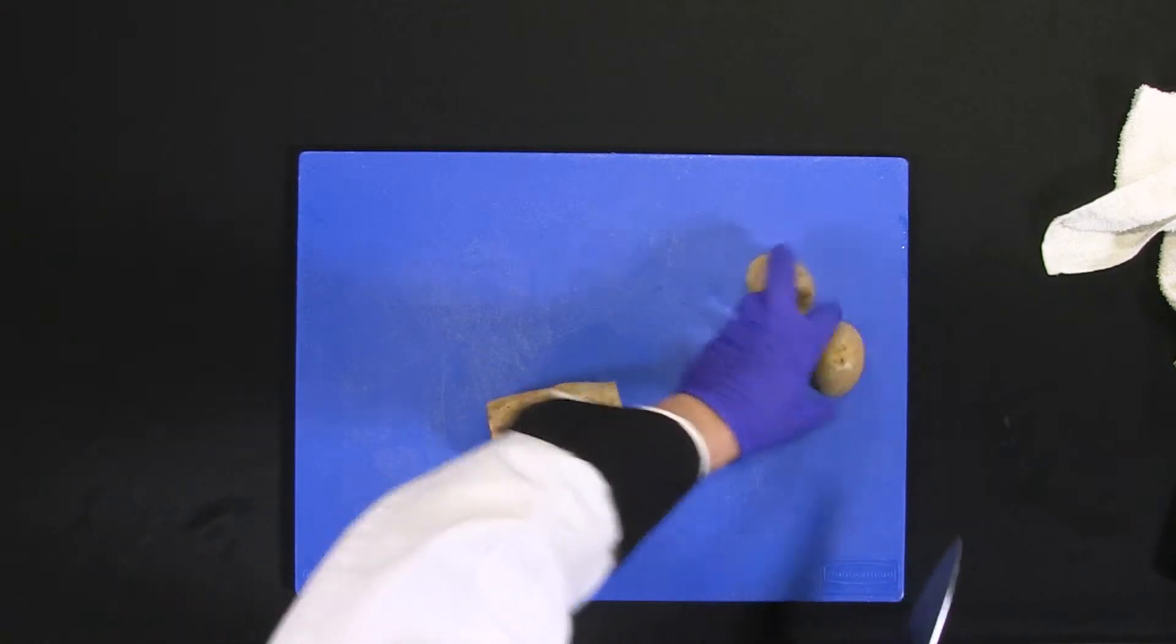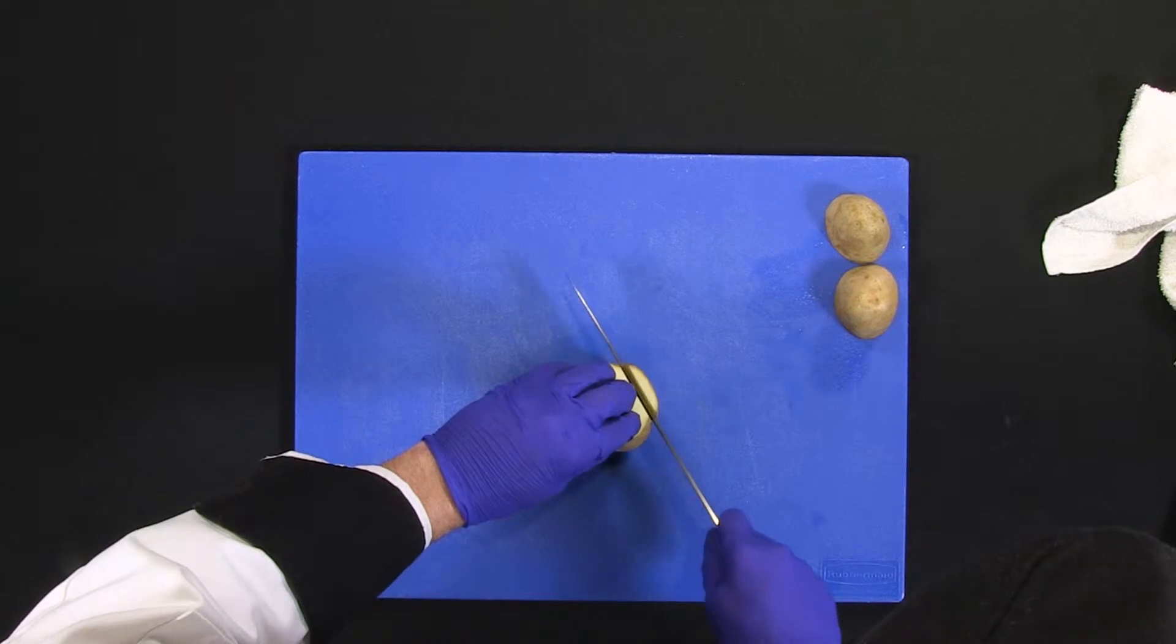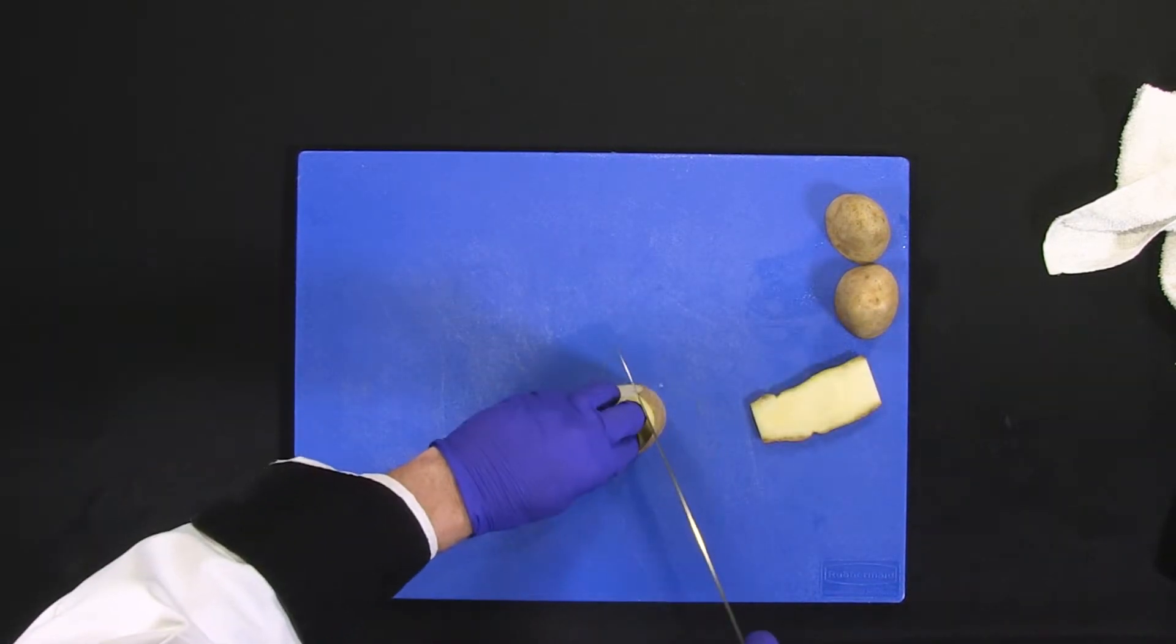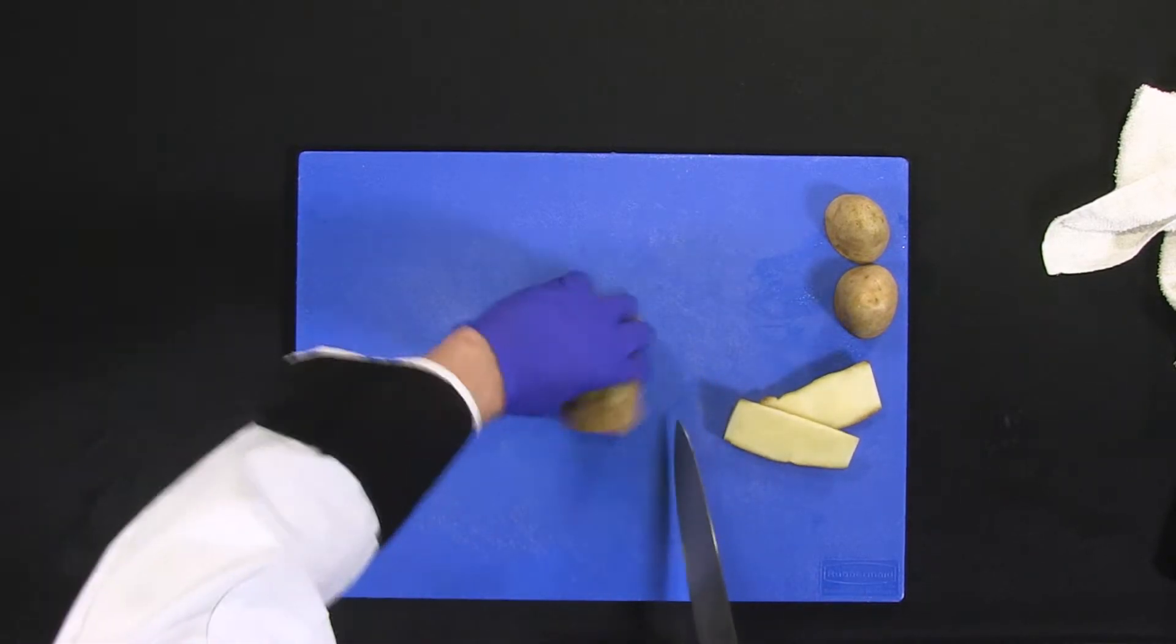We don't want this much waste, but for practicing, let's take it down to this. We want to even out all sides of the potatoes so it's going to be easier to work with. That way it gives a nice stability.